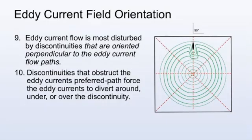Eddy current flow is most disturbed by discontinuities that are oriented perpendicular to the eddy current flow paths. Discontinuities that obstruct the eddy current's preferred path force the eddy currents to divert around, under, or over the discontinuity.